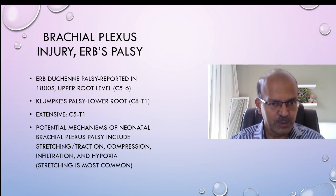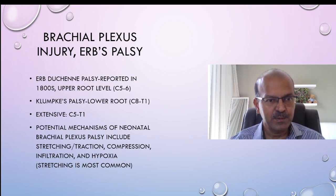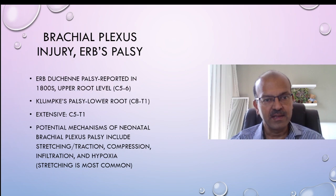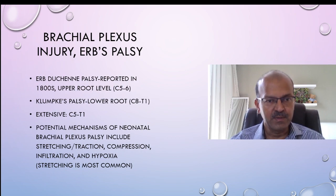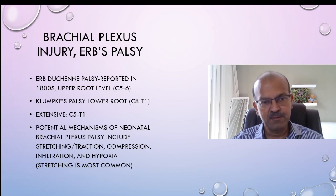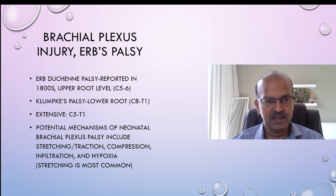Also known as Erb's palsy, it was reported in the 1800s and typically it was involving the upper root level of C5, C6. We also have Klumpke's palsy which is a lower root C8, T1, and when there is extensive involvement of the brachial plexus it can involve from C5 to T1, which is total paralysis.